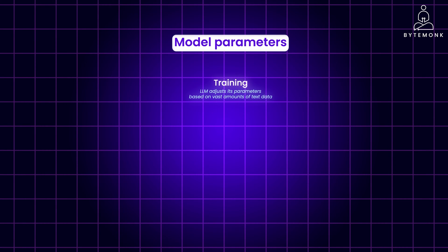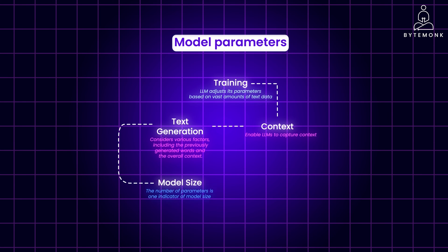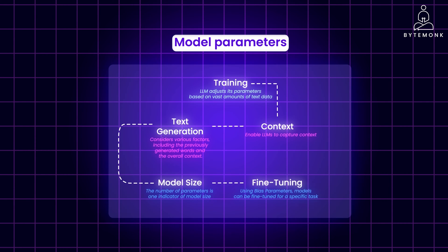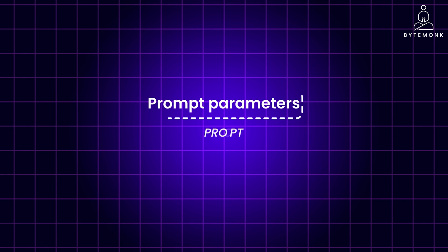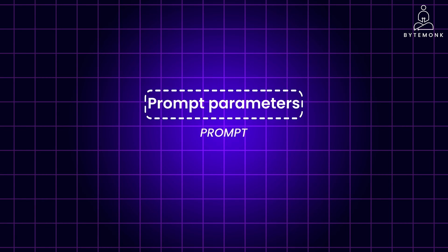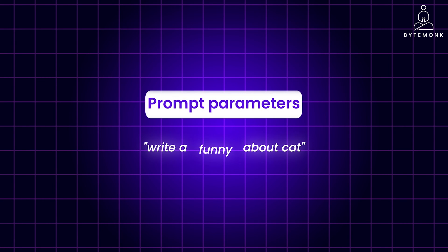We saw how model parameters can be used at multiple levels in an LLM — at the time of training, text generation, or fine-tuning. Once an LLM is trained, its model parameters are typically fixed. Changing them would require retraining the entire model, which is computationally expensive and not feasible for most applications. Prompt parameters, however, are highly modifiable — users can adjust them based on their specific needs and desired outcomes, and different prompt parameters can be used for the same input to generate diverse outputs.